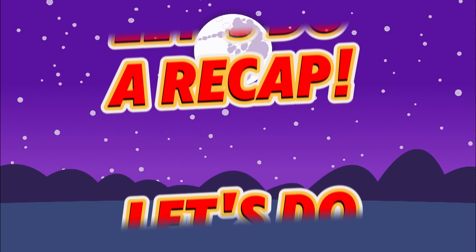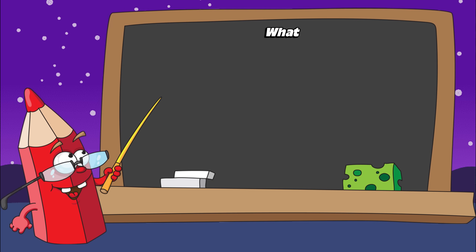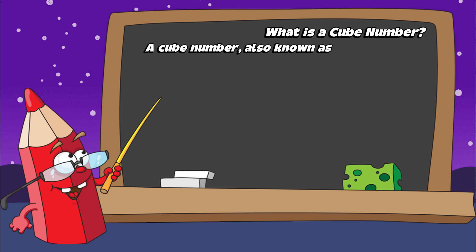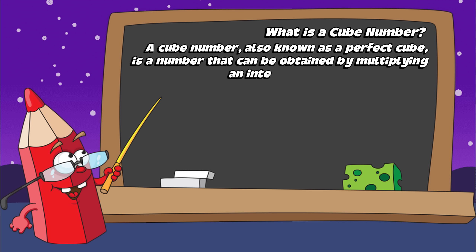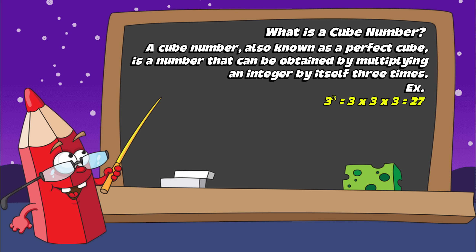Let's do a recap. What is a cube number? A cube number, also known as a perfect cube, is a number that can be obtained by multiplying an integer by itself three times. Example: three cubed is three times three times three, which equals twenty-seven.